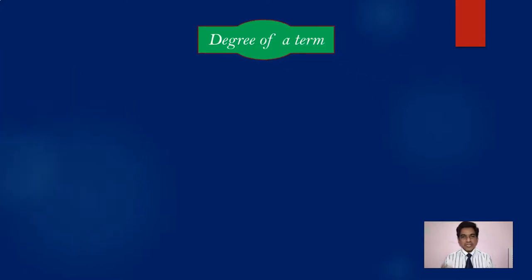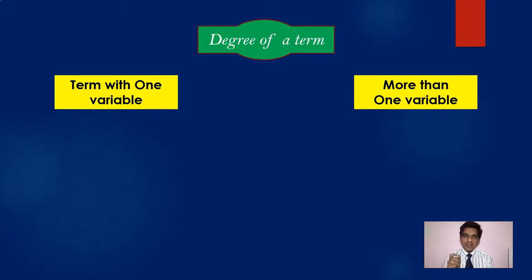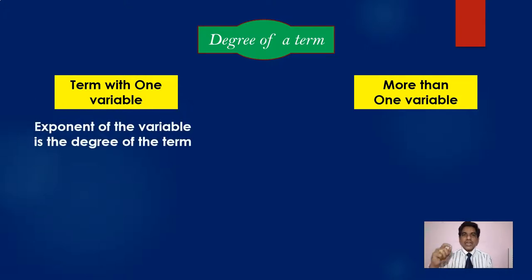Now every term has a characteristic property called degree. We have two different types of terms — involving one variable and involving more than one variable. If there is only one variable in the term, the exponent of the variable gives the degree of the term.